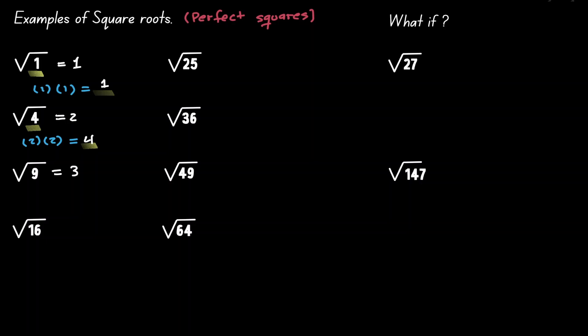The square root of 25 is equal to 5, because 5 times 5 equals 25. The square root of 36 is 6, because 6 times 6 gives you 36.